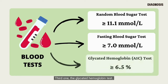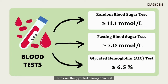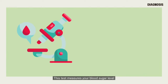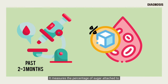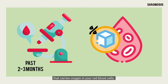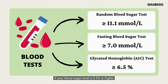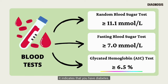The third test is the glycated hemoglobin test. This test measures your blood sugar level for the past 2 to 3 months. It measures the percentage of sugar attached to your hemoglobin, which is a protein that carries oxygen in your red blood cells. If your blood sugar level is 6.5% or higher on two separate tests, it indicates that you have diabetes.